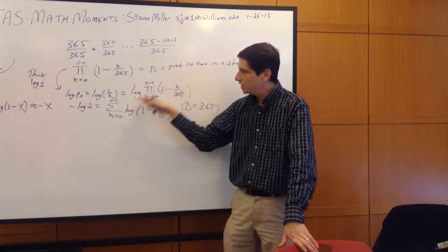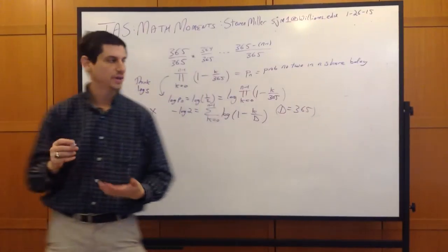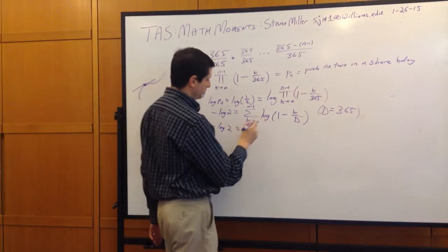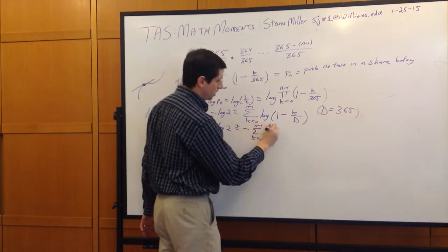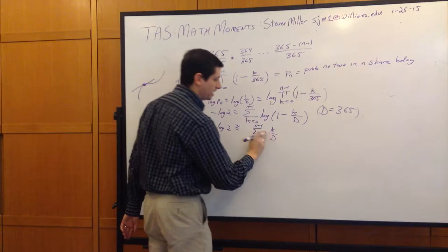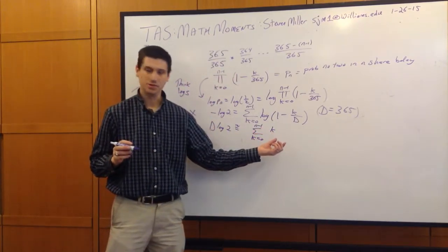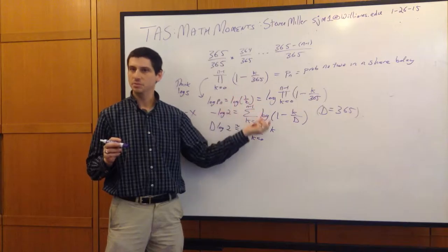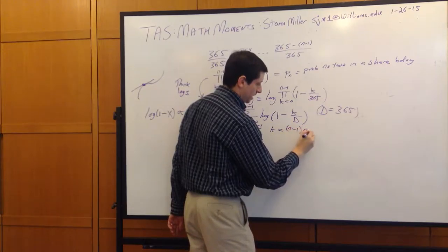This is a nice application of calculus. We get that negative log of 2 is approximately negative times the sum of k over d, where k goes from 0 to n minus 1. The negative signs cancel, and we can multiply through by d. This is the sum of the first so many integers, which equals n times (n minus 1) over 2.